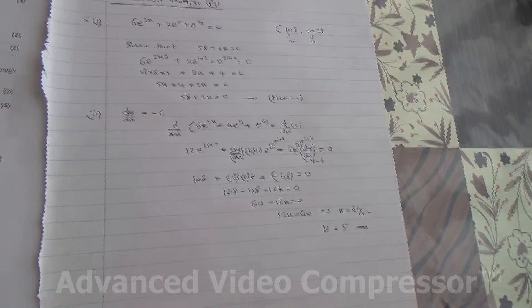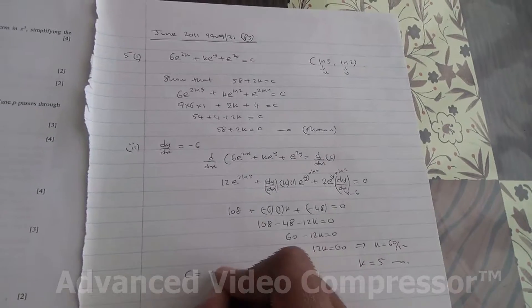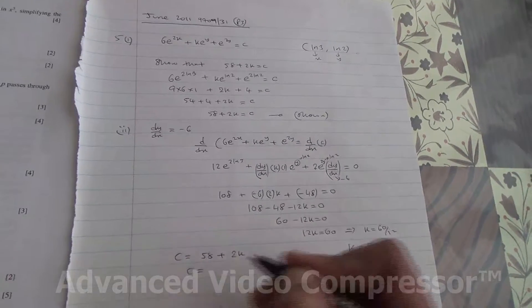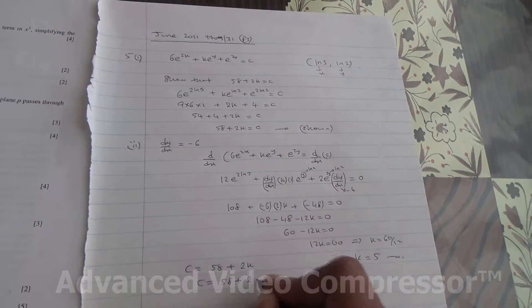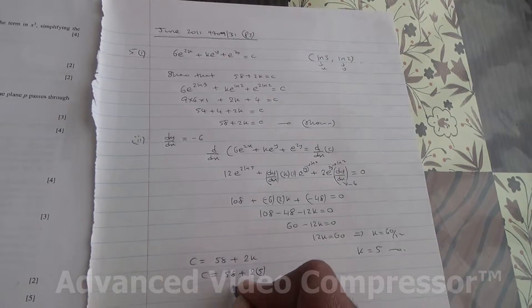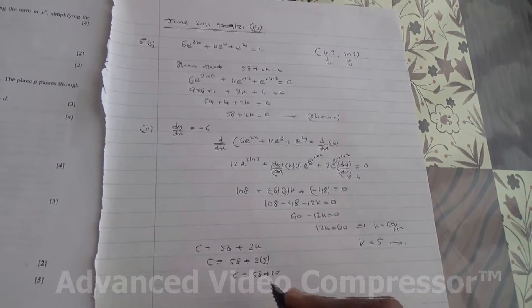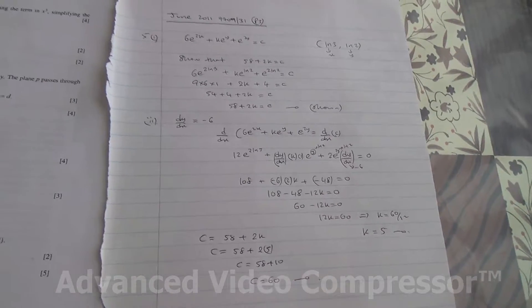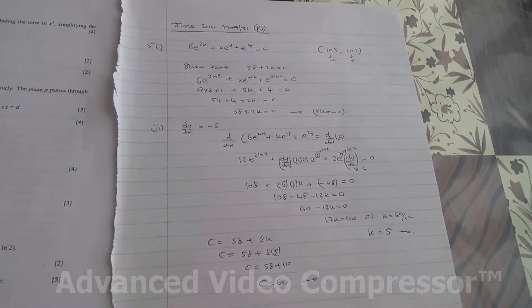We've found the value of k, now we need to find the value of c. c is equal to 58 plus 2k, so c is going to be then 58 plus 2 times 5 which is 10. c is equal to 58 plus 10, and therefore we've got then c is equal to 68. So this is question number 5, taken from June 2011 Advanced Level Maths P3.